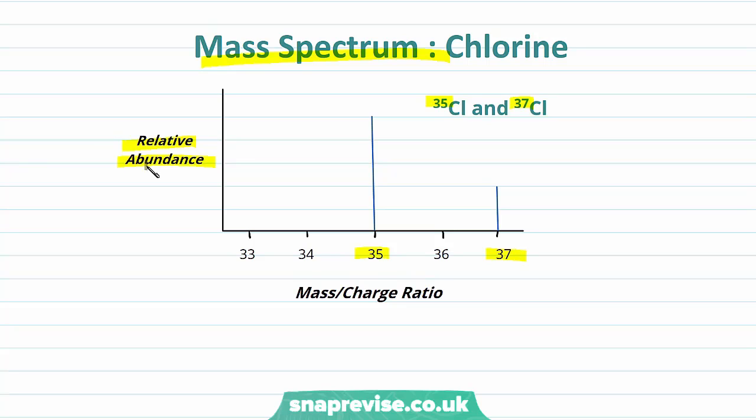Now you'll notice they're different heights. This is indicating a difference in the relative abundance of these two isotopes. What we mean by that is in nature, chlorine-35 and chlorine-37 are both present but they're not both present in the same amounts. We can see there's slightly more of chlorine-35 than there is of chlorine-37.